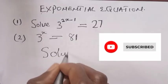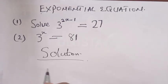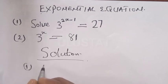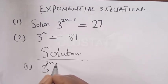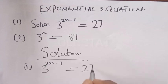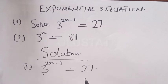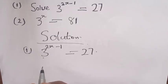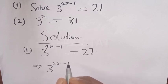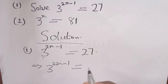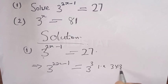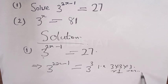Solution. Question number one says: solve 3 raised to power 2x minus 1 is equal to 27. This has a base of 3, and 27 must be expressed in the same base. This implies that 27 can be expressed as 3 raised to power 3, because 3 times 3 is 9, and 9 times 3 is equal to 27.